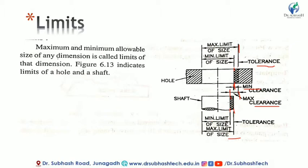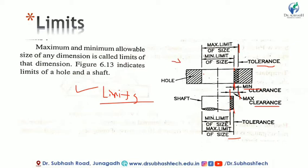The maximum and minimum allowable size of any dimension is called the limits of that dimension. We have the maximum limit and the minimum limit of size for each component dimension.